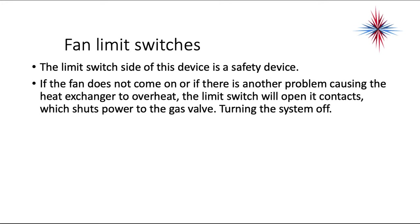The system will cycle on and off on high limit if the problem is not resolved. Things to check with limit switch problems: make sure all the ducts are open, all the registers are open, there's return air, the filter's clean, and the fan is coming on. Those are all things to check if you have a system that keeps bouncing on and off on high limit.